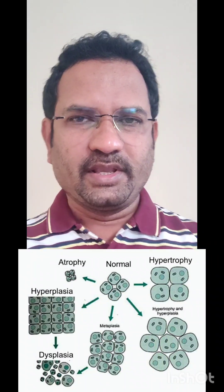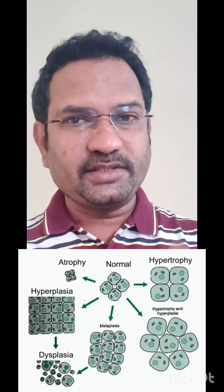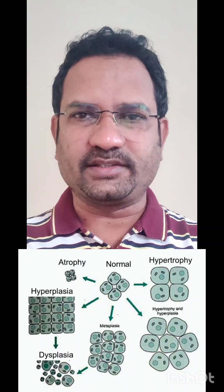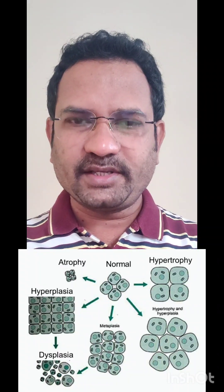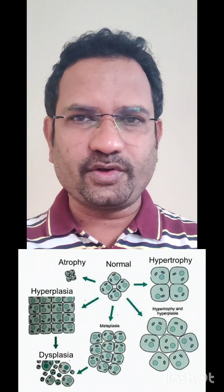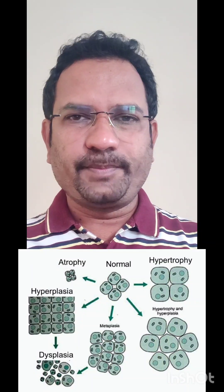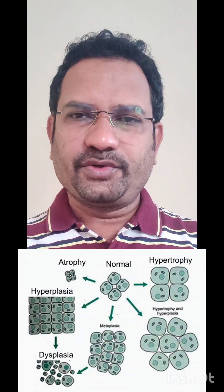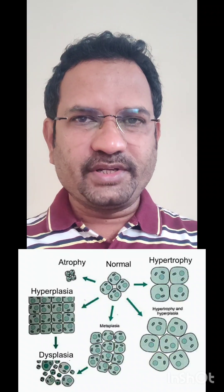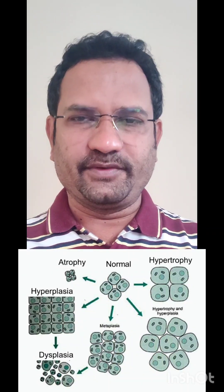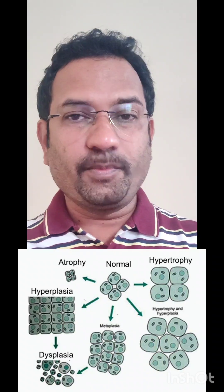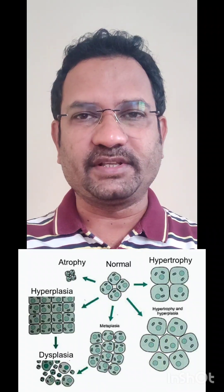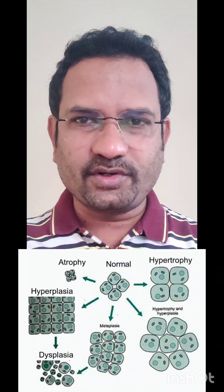Let us understand one by one. The question asks about increase in size of an organ or tissue not associated with cancer. The first word, neoplasia, is another synonym for cancer. Neo means neoplasia means increase in number of cells. Cancer occurs due to mutations, and that mutation results in uncontrolled cell division. So neoplasia is related to cancer — it is not increase in size, it is increase in number of cells. So this is not the answer.